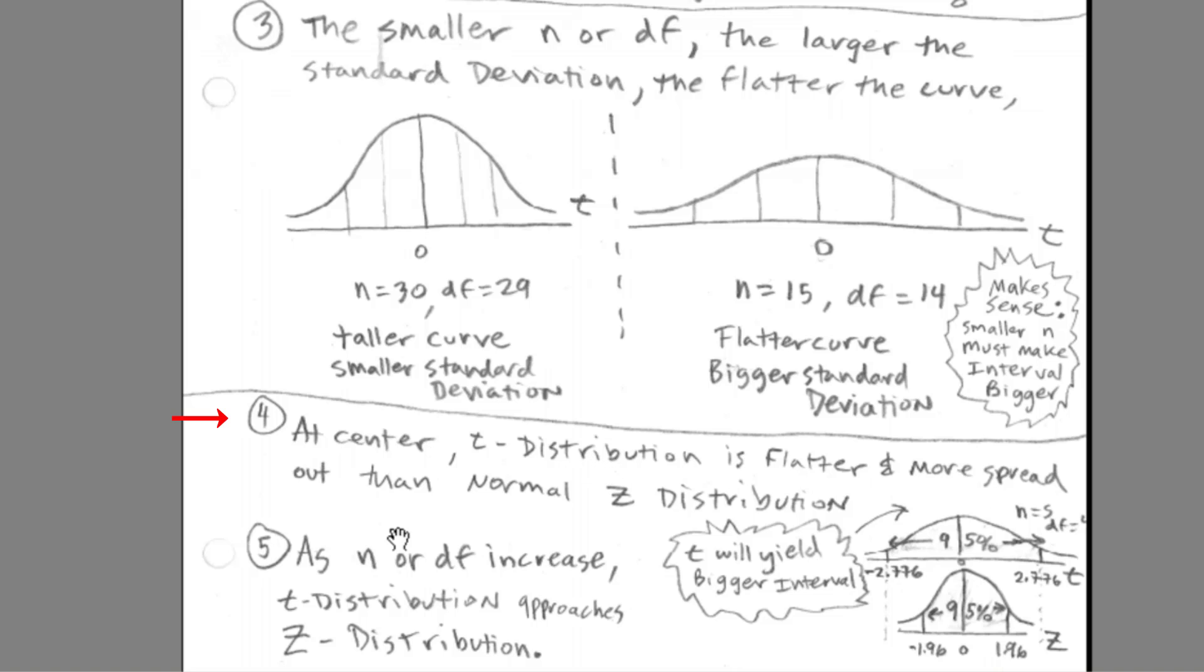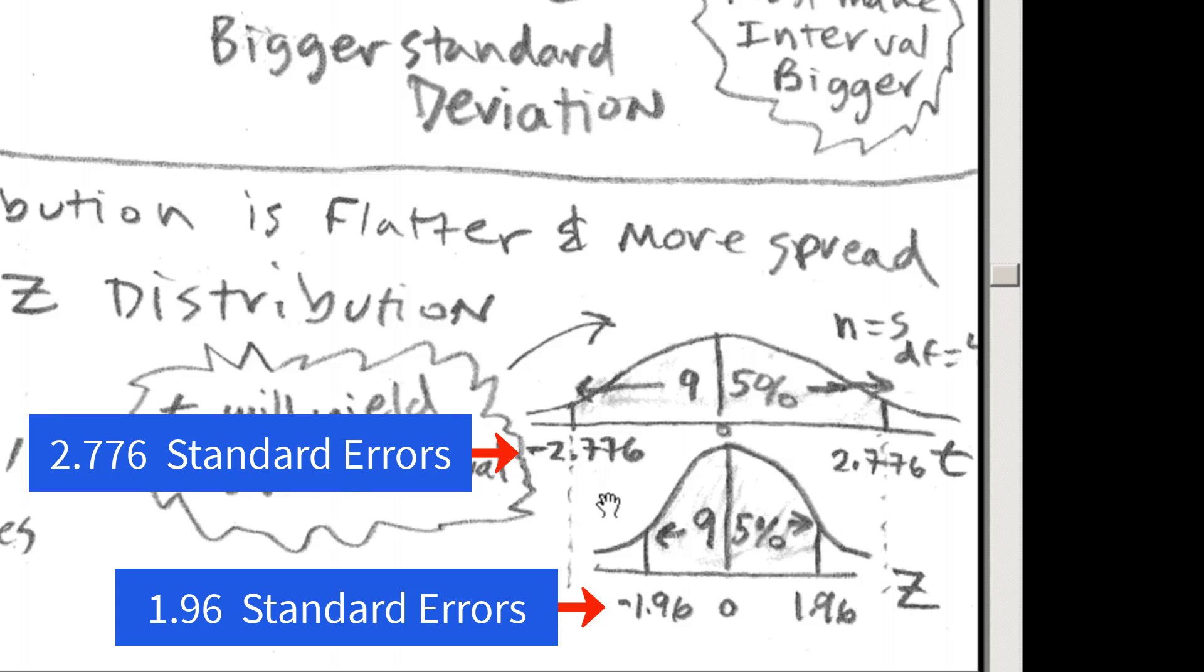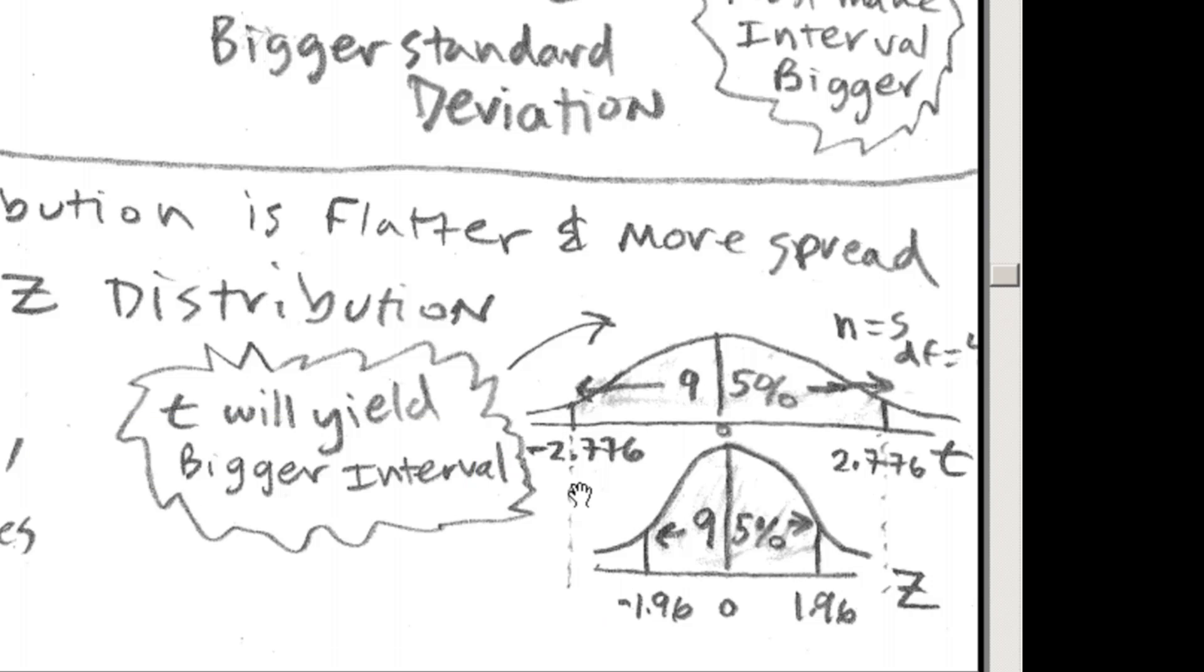At the center, the t-distribution is flatter and more spread out than the normal z-distribution. So you can see, if we had our z-distribution, 95% would give us about minus 1.96 standard deviations, 1.96. If we had n equals 5 to get the same 95% confidence interval, we'd have to increase the standard deviations from 1.96 to 2.76. So that means we're multiplying times the standard error, and we have a much bigger number.